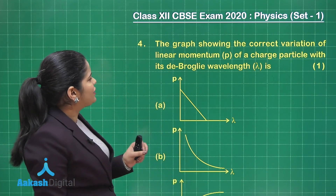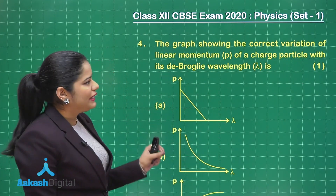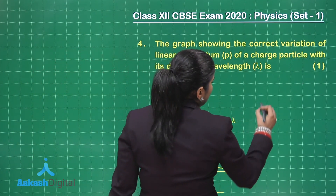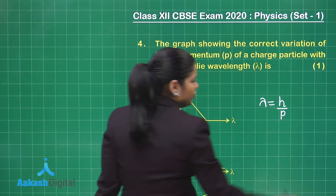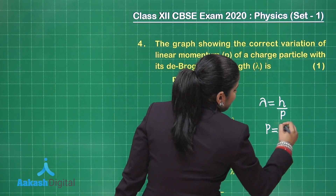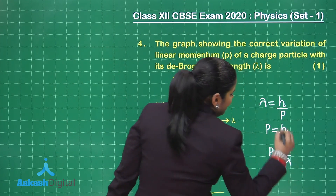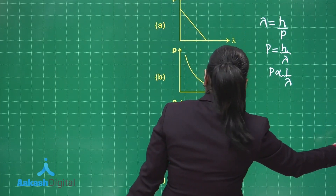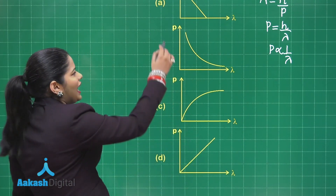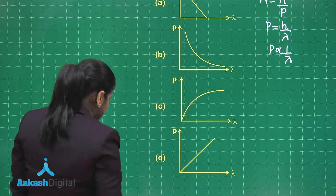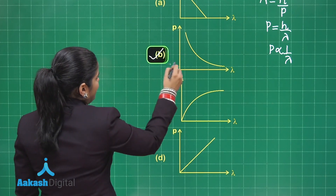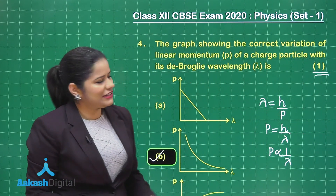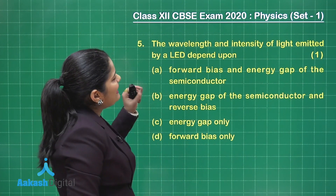The next question is based on de Broglie's wavelength. It asks for the graph showing the correct variation of linear momentum of a charged particle with its de Broglie wavelength. Since wavelength lambda equals h/p, a close look at the options shows that option B is the correct option, again fetching one mark.